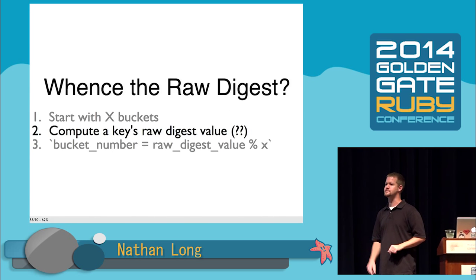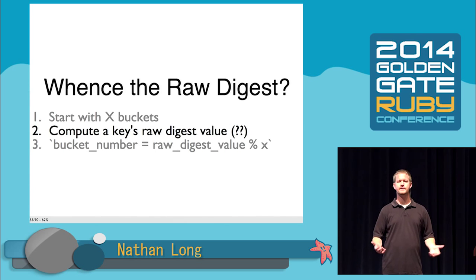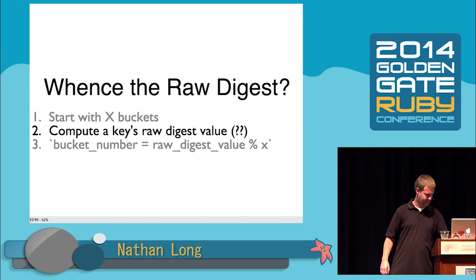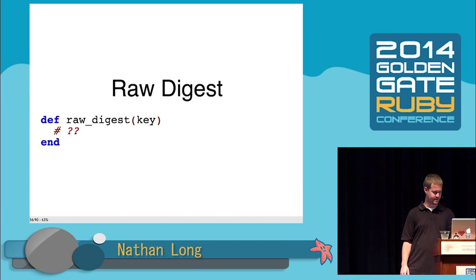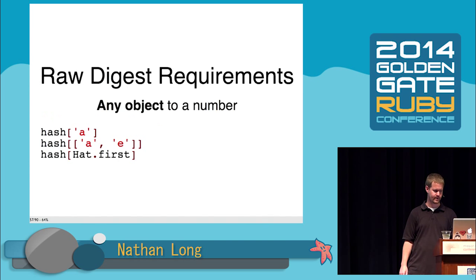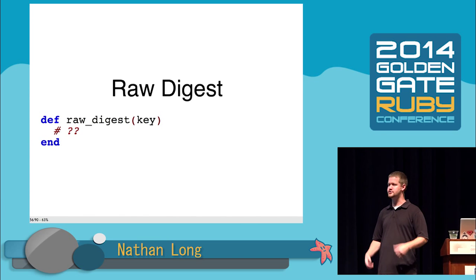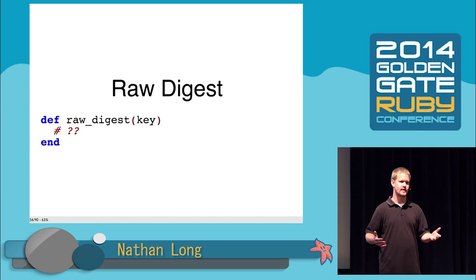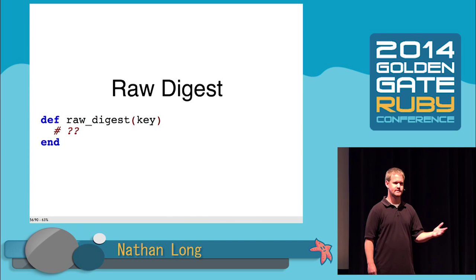I just glossed over this before — where do we get a raw digest value? Somebody gives us a key and we want to come up with a number we can modulo. This is kind of hard. My first thought was: take a string key, turn it into Unicode code points — those are numbers — and use that. But we don't just have to support string keys. In Ruby, anything can be a key: a string, an array, some hat object. So I can't just depend on it being a string.